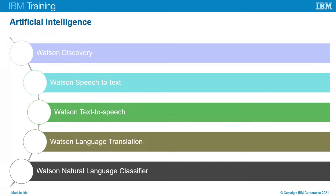Watson Speech to Text transforms voice into written text. Watson Text to Speech converts written text into natural sounding audio in a variety of languages and voices. Watson Language Translator dynamically translates documents from over 20 different languages and can identify up to 68 languages. Watson Natural Language Classifier assigns custom categories to input text.